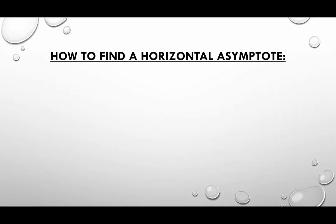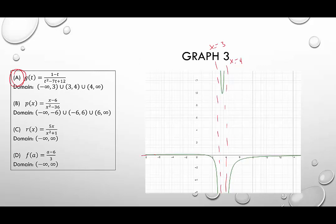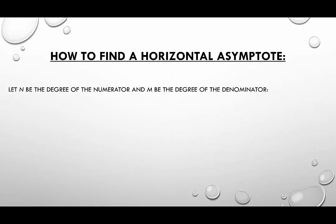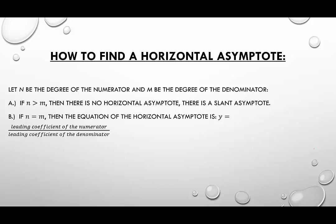Next, we consider horizontal asymptotes. Let N be the degree of the numerator and M be the degree of the denominator. If N is bigger than M, there is no horizontal asymptote — there is a slant asymptote, which we won't cover here. If the two degrees are equal, the horizontal asymptote is given by y equals the leading coefficient of the numerator over the leading coefficient of the denominator. If the numerator has a smaller degree than the denominator, the horizontal asymptote is y equals zero.